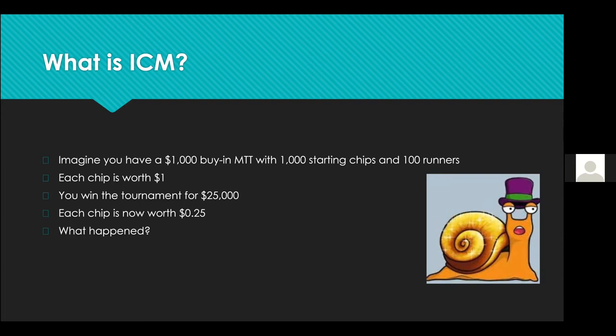Imagine you have a $1,000 buy-in MTT with 1,000 starting chips and 100 runners. An average player is buying 1,000 chips for $1,000, so each chip is worth $1. If first prize is $25,000, you've amassed all 100,000 chips in the tournament but only receive $25,000 — so each chip is now worth just 25 cents. The question is: where did the remaining money go?